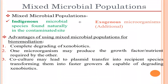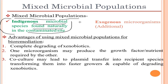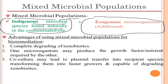Moving on to the mixed microbial population: the mixed microbial population is the combination of indigenous and exogenous microorganisms. Indigenous microbial species are generally found naturally in the contaminated site — these are microbes which grow over a period of time at the site. Exogenous microorganisms are introduced from outside, and the combination of both constitutes the mixed microbial population.